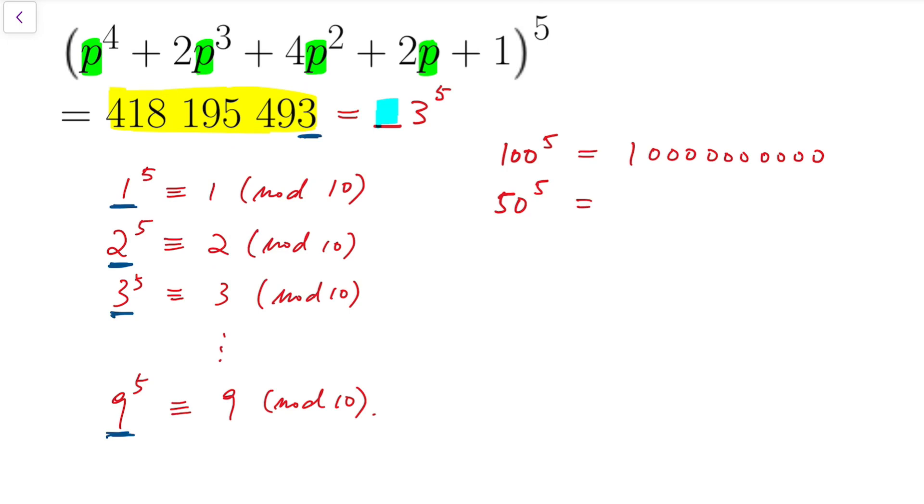Next, we notice that for 50 to the power of 5, the number is equal to 3, 1, 2, 5, and then 5 zeros. Really close, also 9 digits. Whereas for 60 to the power of 5, it's equal to 7, 7, 7, 6, and then 5 zeros. So we know that this fifth power must be between 50 and 60 to the power of 5. And we know that the last digit is 3, so therefore this digit is actually just 5.